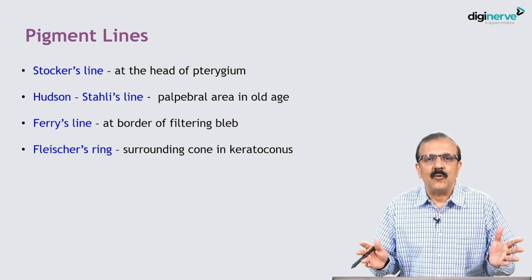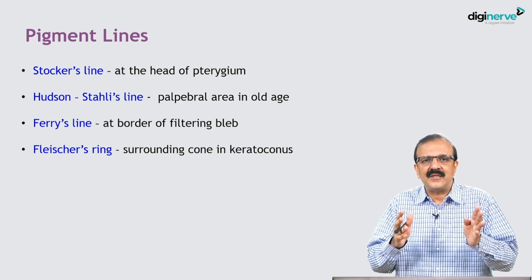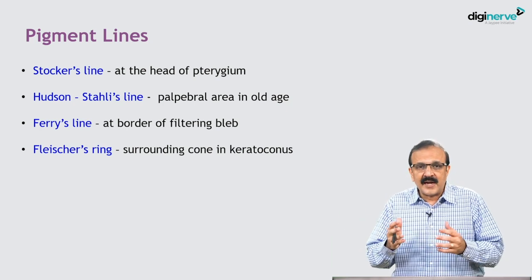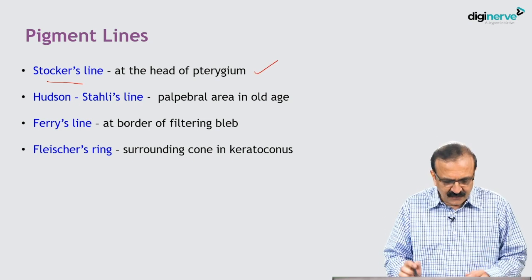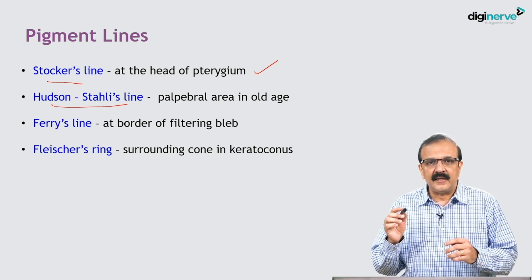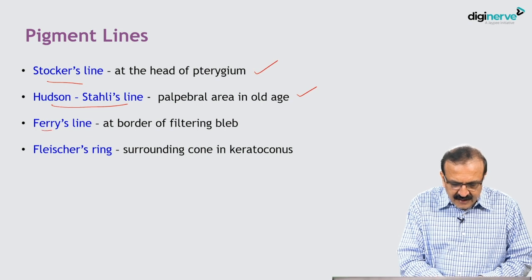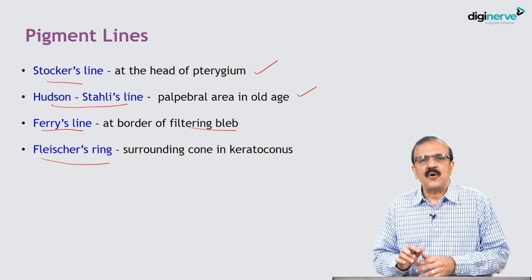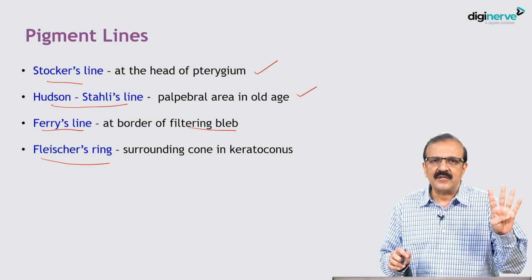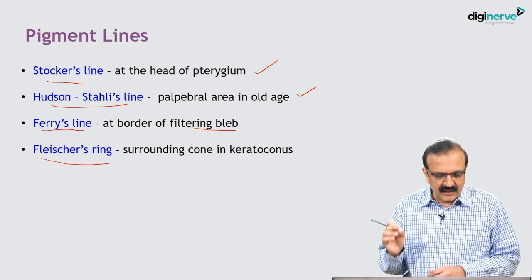When you present that Stocker's line is there, the examiner is going to ask you what other pigment lines you know. You have to be prepared for such deviations in the exam. Stocker's line is seen at the advancing edge of the head of the pterygium. There is a Hudson-Stähli line in the palpebral area in old age — age related, without any pathology. There is a Ferry's line — iron pigmentation at the border of the filtering bleb — and Fleischer's ring surrounding the cone in keratoconus. These are the four pigmentations you need to know.